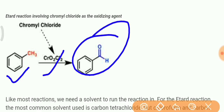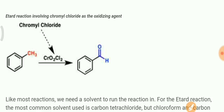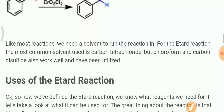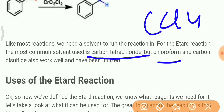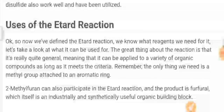So, from toluene, we need to make an aldehyde. The chromyl chloride formula is CrO2Cl2. The solvents we can use in this reaction are: carbon tetrachloride (CCl4), or chloroform (CHCl3), or carbon disulfide (CS2). We can use these as a solvent in which we will carry the reaction forward.